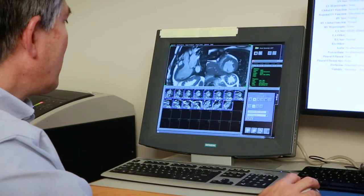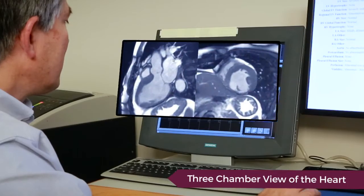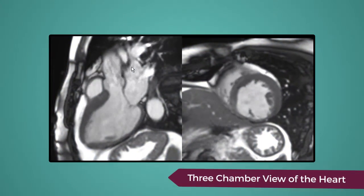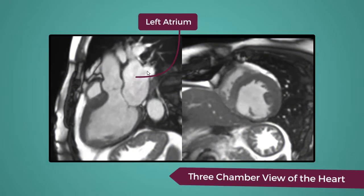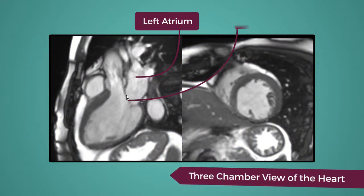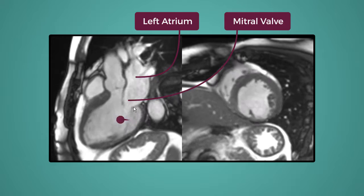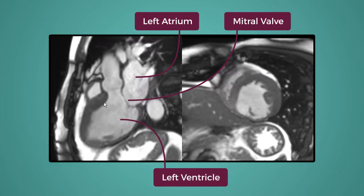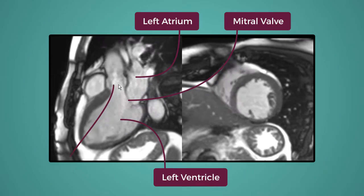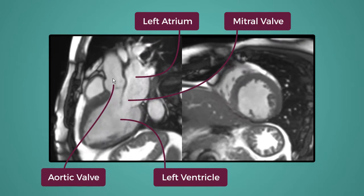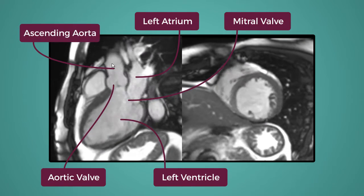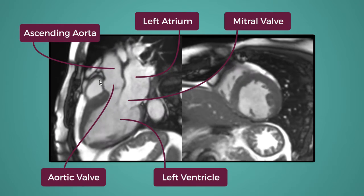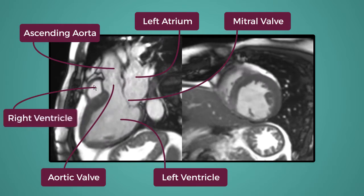The left-hand screen here shows what we call the three-chamber view. We see the left atrium, the mitral valve, the left ventricle, the aortic valve, and a little bit of the ascending aorta, and a little bit of the right ventricle.